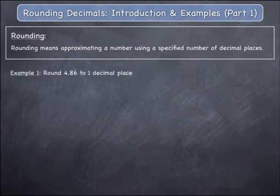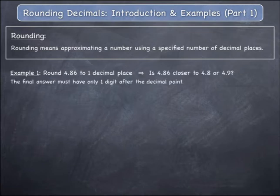Example 1, round 4.86 to one decimal place. 4.86 is in between 4.8 and 4.9 and you are really being asked whether 4.86 is more closely approximated by 4.8 or 4.9.